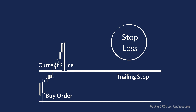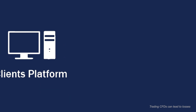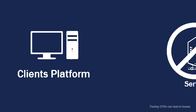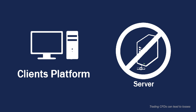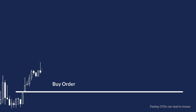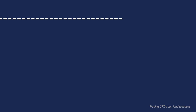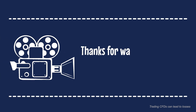Once the price reaches this level, the position is closed. Trailing stops are executed on the platform directly, from the chart or the terminal window, and not on the server like the stop loss and take profit. Trailing stop is activated only when the profit of the position reaches or exceeds the trailing stop level.